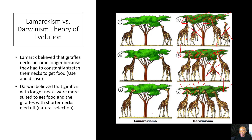By the time we get to the third generation, all of these giraffes have long necks — because long necks are a better adaptation for giraffes to survive. That's where we get the idea of survival of the fittest: the ones most fit to adapt and survive in the environment will live, and the ones that are not most fit will die.